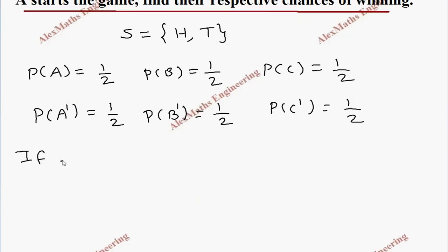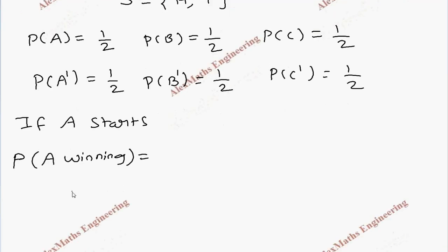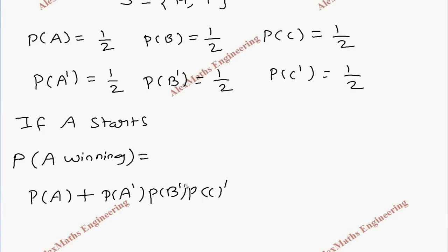Now if A starts, we are going to find the probability of A winning. So we are going to write a series where A wins. When first A throws, he might win — this is the first case. Or when he throws, A is not getting head, then chance goes to B and he should not win, and chance goes to C and C should not win, then chance comes to A and A wins. In the first case A wins in the first trial; here he wins in the second trial.